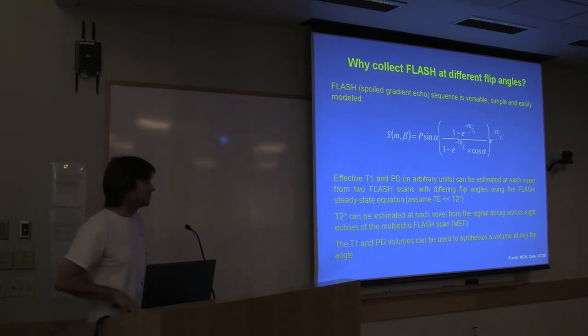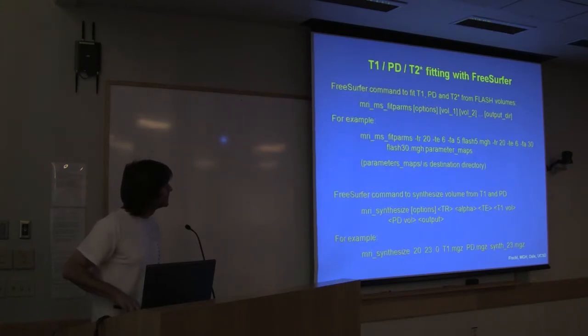So, by choosing a short TE, we can get rid of this term, and then we've got an equation with two unknowns. We can just choose two different flip angles. We can have two equations and two unknowns, and we can solve for T1 and P. We can estimate T2 star from the multiple echoes, if we want to. Once we have those T1 and PD volumes, we can synthesize a volume with any flip angle, and I'll show you that in another slide. So, FreeSurfer has commands to do the fitting, MRI_MS_fitparms, is the command. You just run this with different volumes with the different flip angles. You get an output directory, and in that directory are T1 estimates and PD estimates and T2 star estimates. You can use MRI_synthesize command to make a volume from those T1s and PDs. You can say, what would my image have looked like if I did a 50 degree flip angle, even though you didn't collect it.